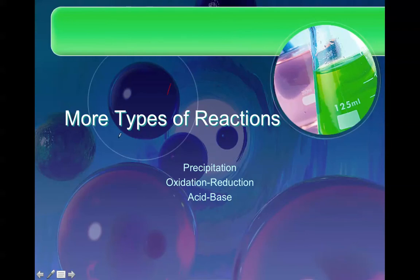I need to tell you all about three more types of reactions: precipitation reactions, oxidation-reduction reactions, and acid-base reactions. These are not completely separate from the five types you already know — they're just a more specific classification of those five reaction types: synthesis, decomposition, single replacement, double replacement, and combustion.